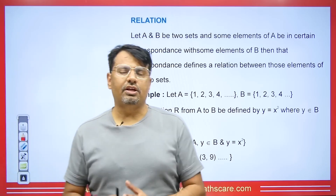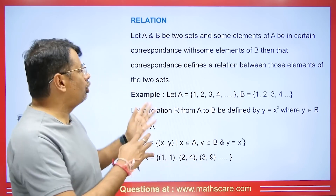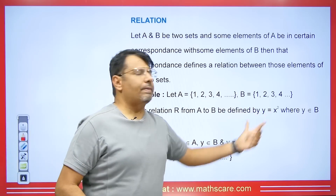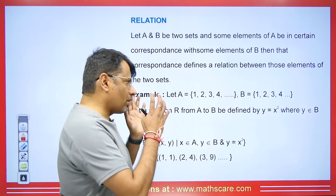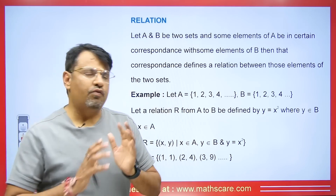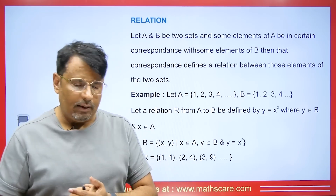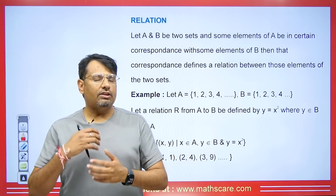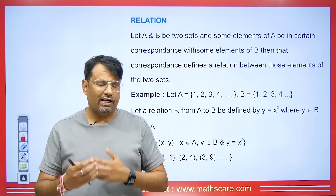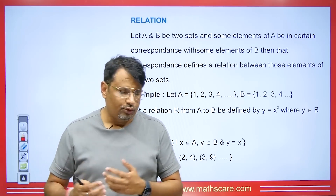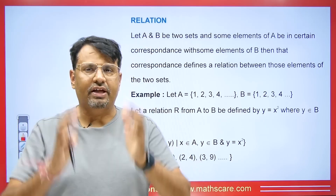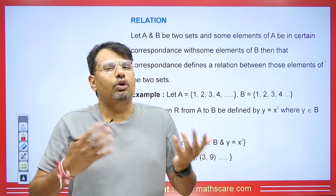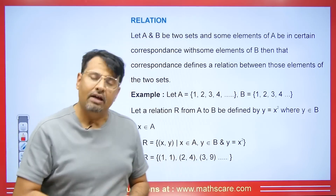First of all, we will talk about relation. When we have two sets and we have defined a function between those two sets, then the set of Cartesian product is in relation or not. Now the relation involves three key concepts: reflexivity, transitivity, and symmetry. We examine the relation to see if it exhibits any or all of these properties. If all three are present, we have what is known as an equivalence relation.